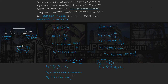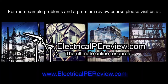That means the largest load these two transformers in parallel can supply without either operating in an overload condition is 2207.5 kVA. For more examples and to visit our premium review course, come see us at www.electricalpereview.com.